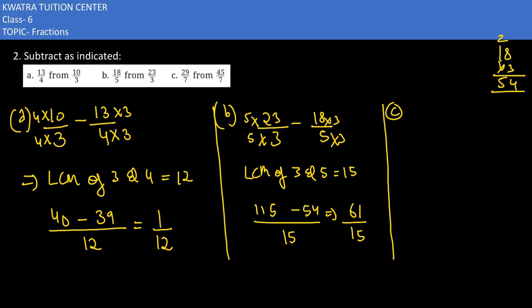In part C, the problem is 45/7 subtract 29/7. Since the denominators are the same, subtracting these values gives you 16, so 16/7 is the answer.